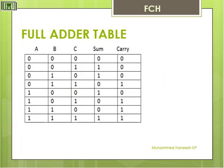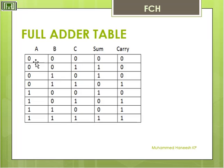Now moving to the Full Adder table. We have the following inputs: A, B, and C. In the Half Adder we have 2 inputs A and B, but here we have 3 inputs: A, B, C. Then output Sum and Carry.